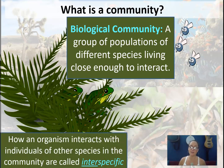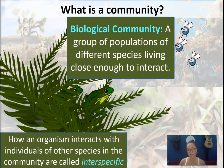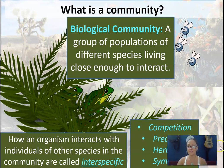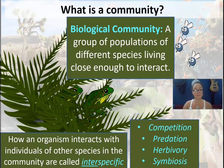How an organism interacts with individuals of other species in the community is called interspecific interactions. Intraspecific refers to frogs interacting with other frogs, but interspecific means different species interacting together. This could include competition, predation, herbivory, symbiosis, and facilitation.